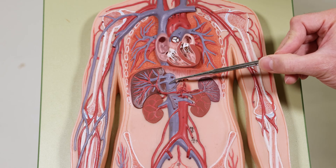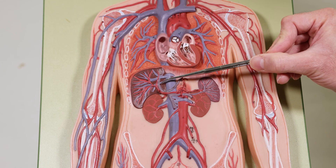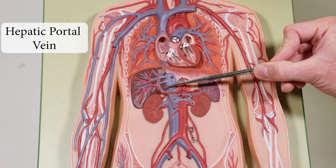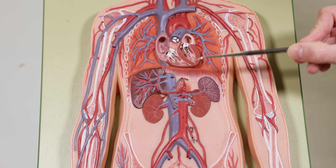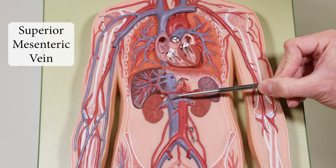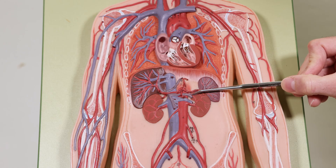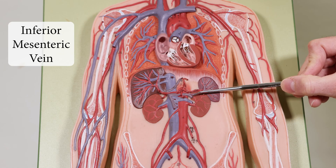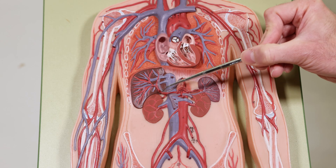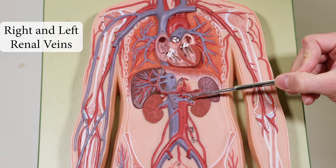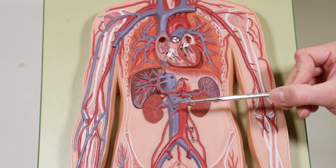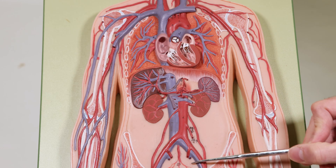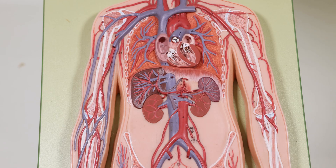On the venous side of the torso, you'll notice the hepatic portal vein, the splenic vein coming all the way across, the superior mesenteric vein, the inferior mesenteric vein, and the right and left renal veins.